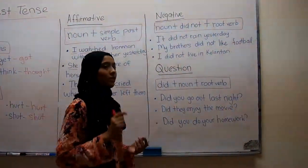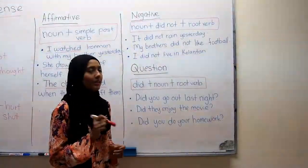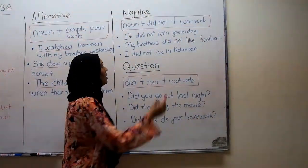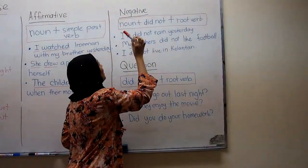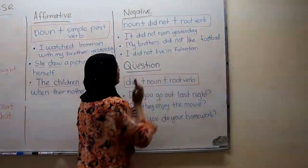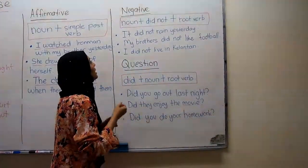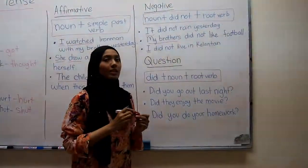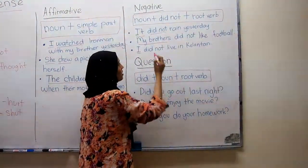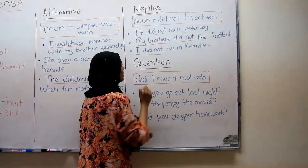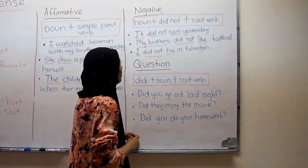The second structure is the negative simple past tense sentence. You place 'did not' between the noun and the root verb. For example: It did not rain yesterday. My brothers did not like football. I did not live in Kelantan. Here, It, my brothers, and I are all nouns followed by 'did not,' and then the root verb — rain, like, and live.